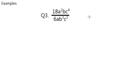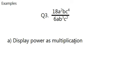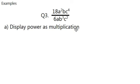So this is question 3. 18a squared bc to the power 4 over 6ab cubed c squared. How should we do this? So what is the first step? It is you should display the question in an easier way, which is display all those number powers as a multiplication.